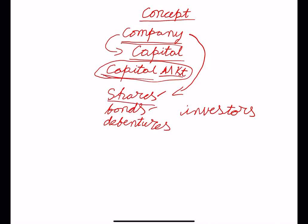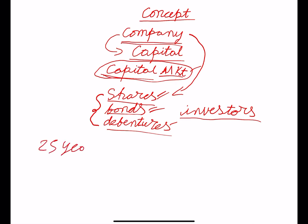Shares are owned capital. Bonds and debentures are loaned capital. Owned capital or loaned capital will be raised from the capital market by the company. Investors will buy the shares, bonds, or debentures. Then the question arises: where will these shares, bonds, and debentures be kept? About 20 to 25 years back, these shares, bonds, and debentures were available in materialized form — meaning physical form — and investors had to keep them safely.